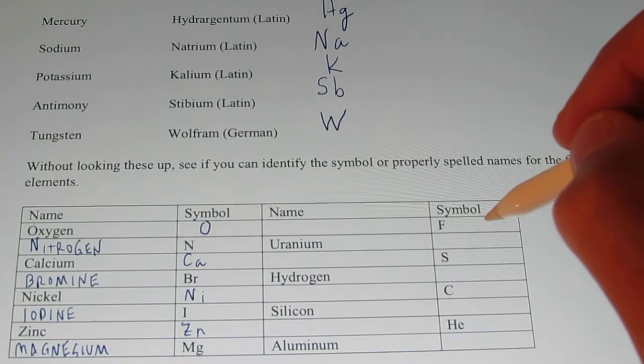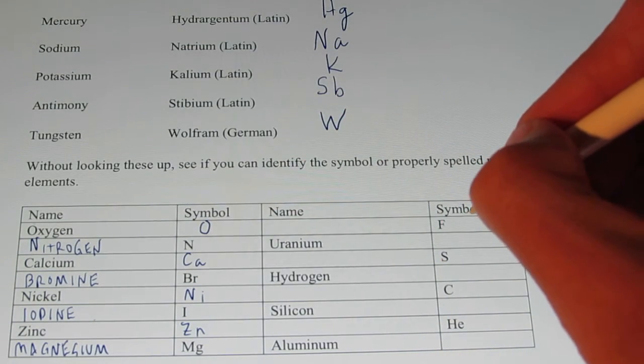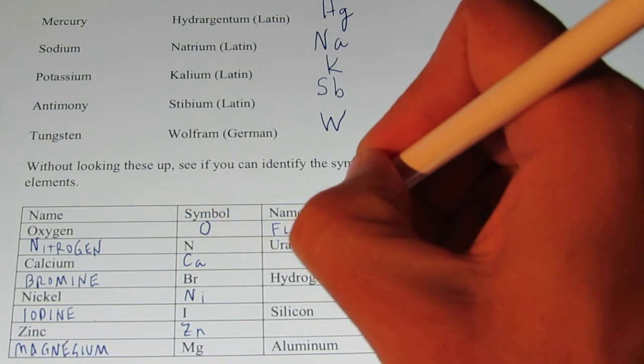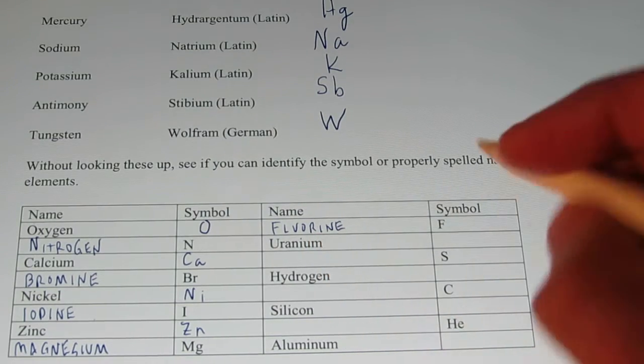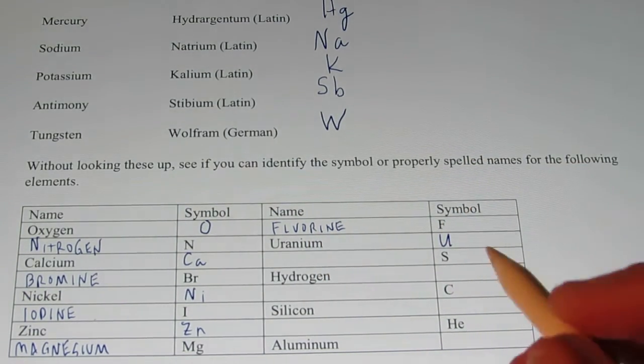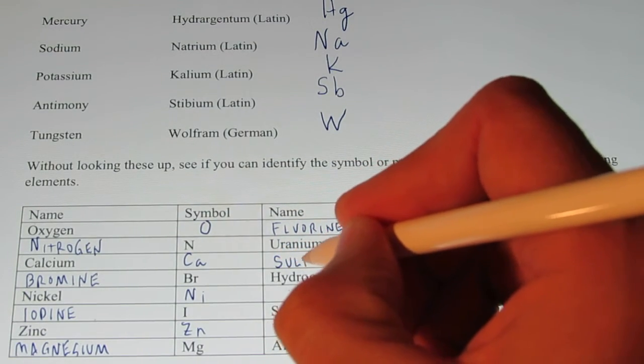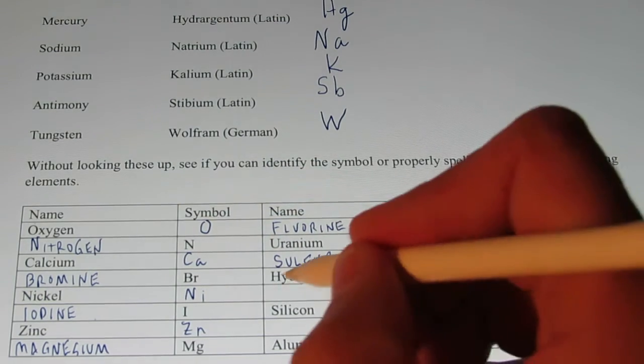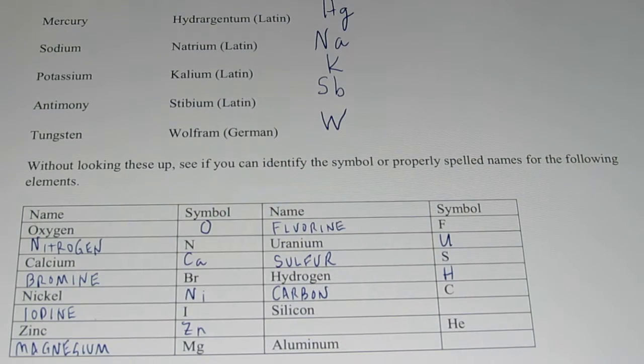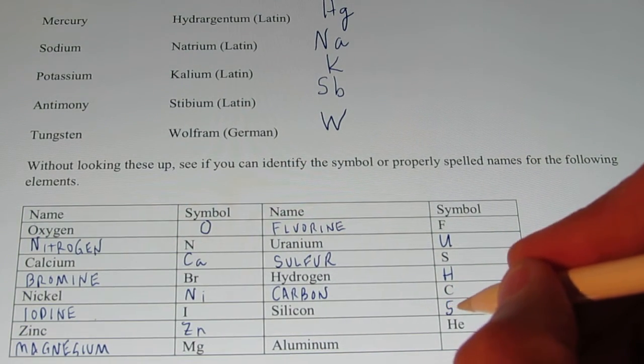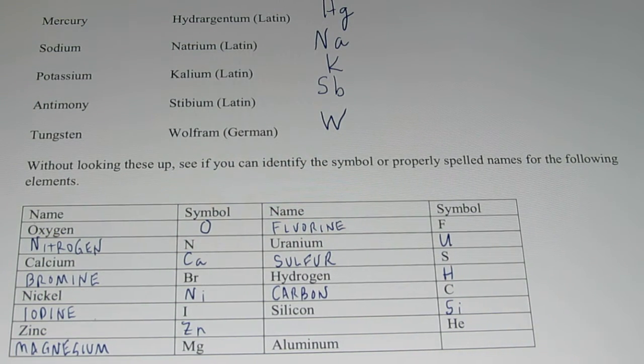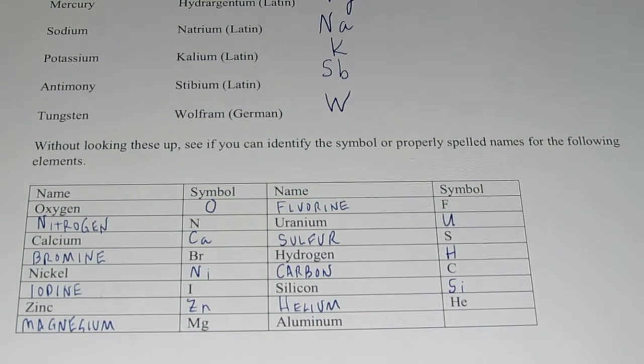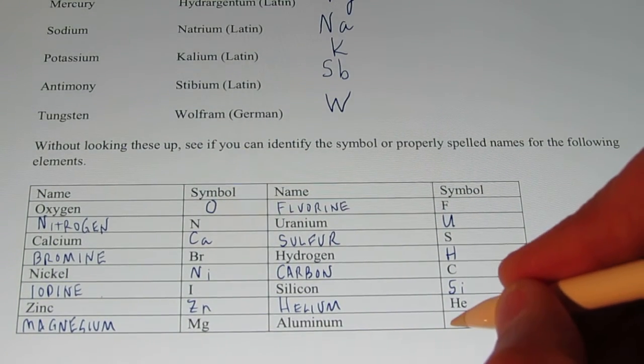Next column, F. Now, F is the symbol for fluorine. However, this is actually commonly misspelled. The symbol F is for the element fluorine. It's spelled F-L-U-O-R-I-N-E. It's fluorine, not flowerine. Okay, uranium. Yeah, you probably got that one. The symbol for uranium is U. S is the symbol for sulfur. That's spelled S-U-L-F-U-R. The symbol for hydrogen is just H. C is the symbol for carbon. C-A-R-B-O-N. The symbol for silicon, you probably got that right, S-I. Of course, it can't be S because that's already used by sulfur. H-E, that's the chemical symbol for helium. H-E-L-I-U-M. And the last one in your chart was aluminum. And the symbol for aluminum is A-L.